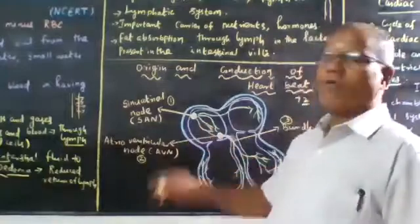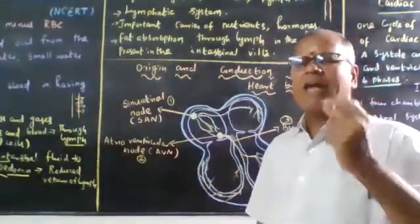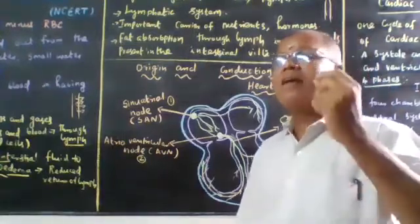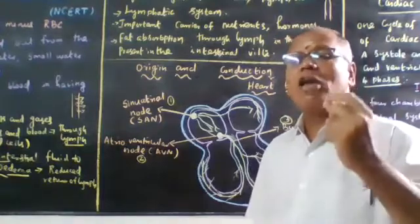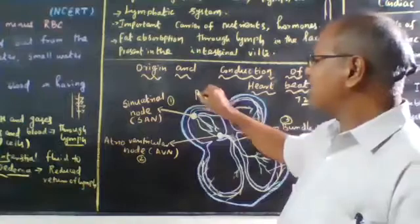Sino-auricular node is located in the right auricle, upper part of the right auricle, where the electrical impulses or heartbeat is initiated. We are calling it as pacemaker.